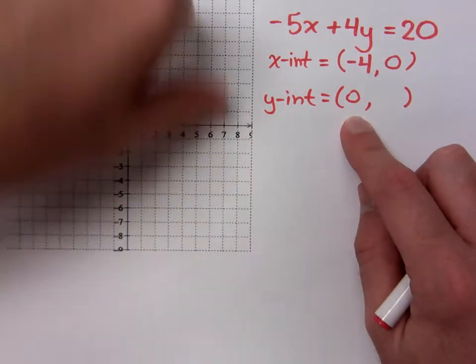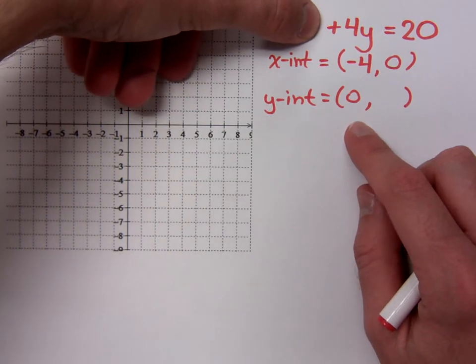For the y-intercept, if x is 0, this guy is gone. I see 4y equals 20, which means y equals what?